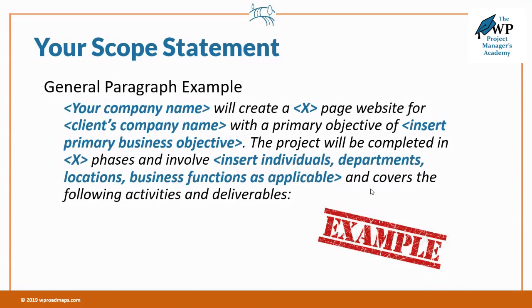Maybe the primary objective is lead generation, maybe it's a sales funnel, maybe it's an online store — whatever that primary business objective is. Then the project will be completed in whatever number of phases you're going to use, and it will involve whichever individuals, departments, or business functions need to be included. It helps to specifically name who at the client side will be involved. Then state that it covers the following activities and deliverables. Something very general, but clearly stating what the scope of the project is, with numbers of pages and phases where applicable.